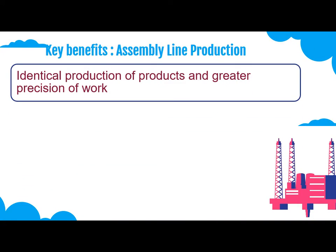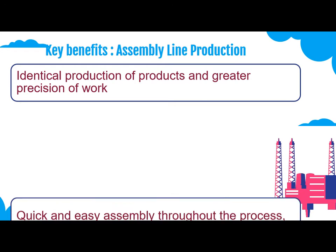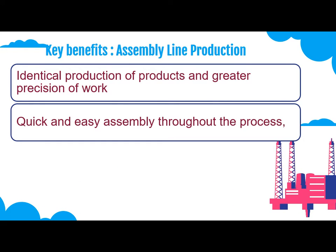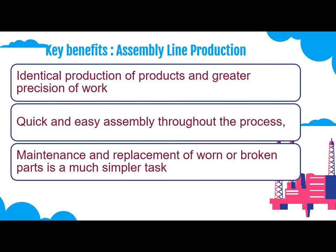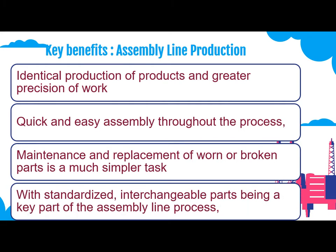Key benefits of assembly line production include identical production of products and greater precision of work, quick and easy assembly throughout the process, and simpler maintenance and replacement of one broken part, with standardization and interchangeable parts being a key part of the assembly line process.